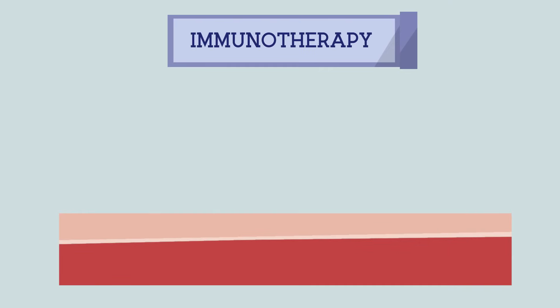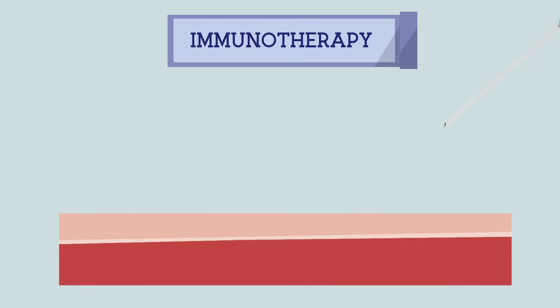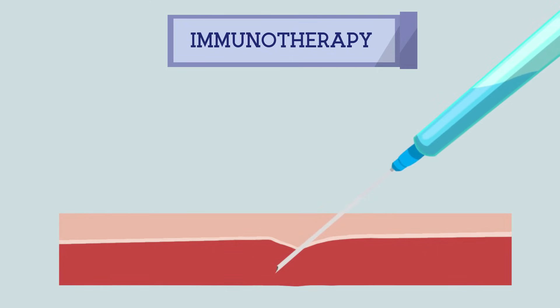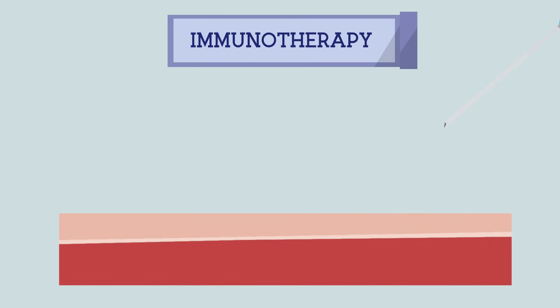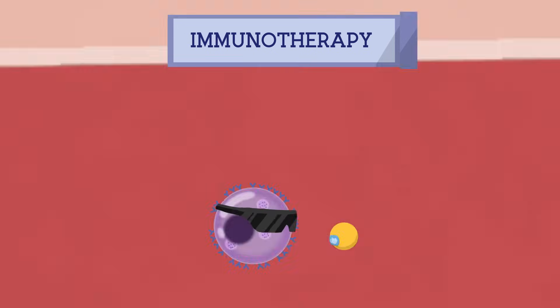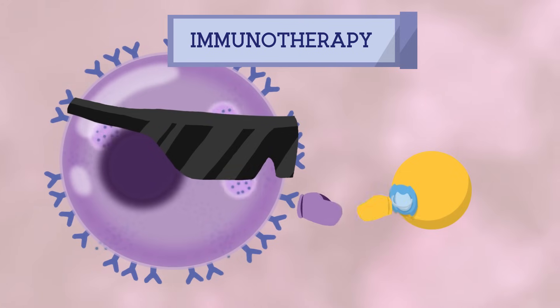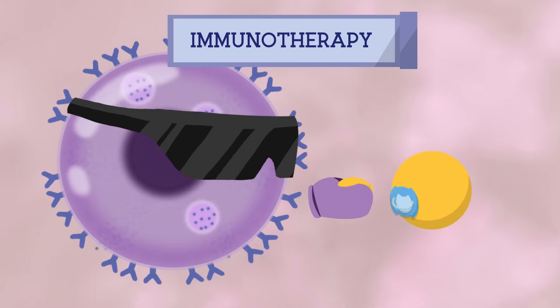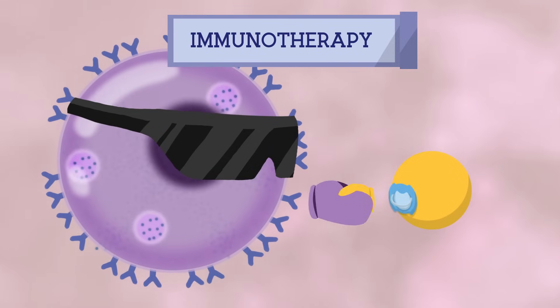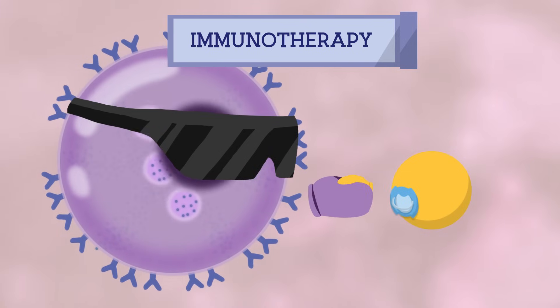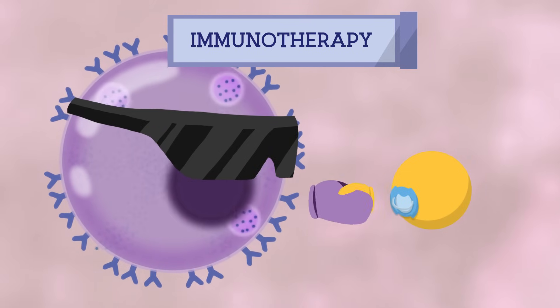5. Immunotherapy. When you get immunotherapy in the form of allergy shots, your allergist or doctor injects small doses of substances that you are allergic to — allergens — under your skin. This helps your body get used to the allergen, which can result in fewer or less severe symptoms of allergic rhinitis.